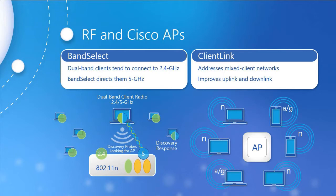Most client devices are at least 802.11n, making them dual-band — they can communicate on either 2.4 or 5 GHz. The problem with 2.4 GHz is that it tends to be more congested and may have legacy devices that slow everything down. You're only as fast as your slowest device. Band select directs these clients to the 5 GHz band for RF optimization — it has higher capacity and is less prone to interference, freeing up 2.4 GHz for devices that actually need it.